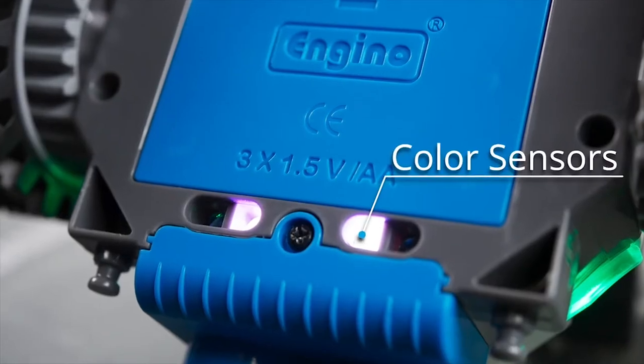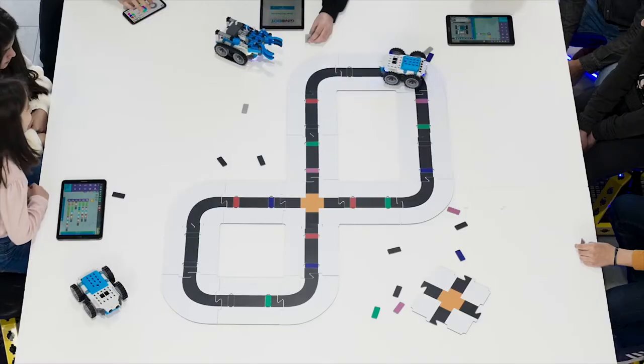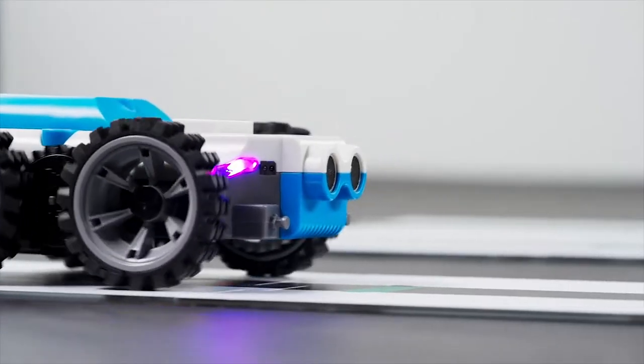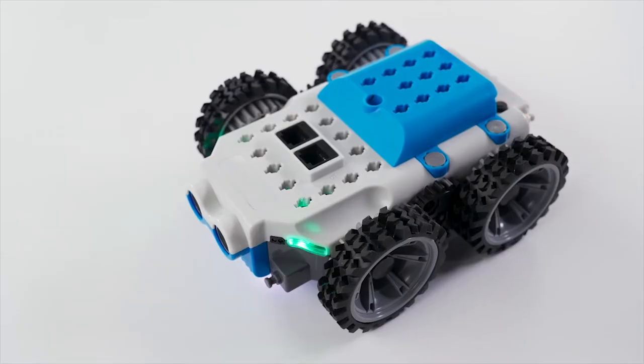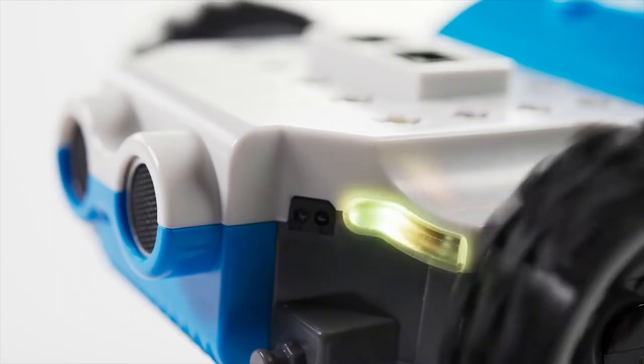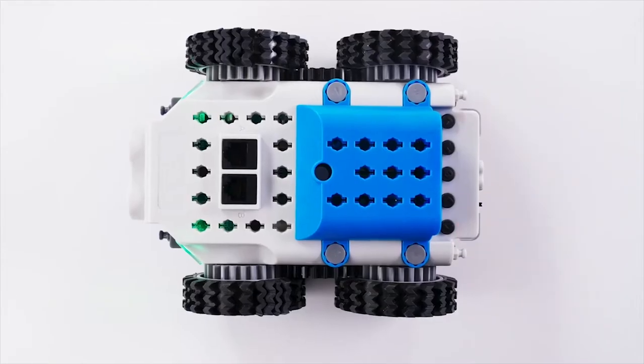The two color sensors at the bottom allow Genobot not only to detect and follow paths, but also different colors and perform actions based on these. Using the integrated buzzer and programmable RGB LEDs at the front and rear, you can really bring your Genobot to life.